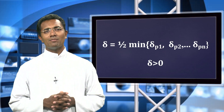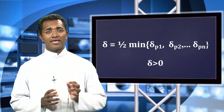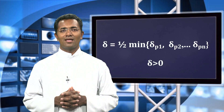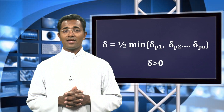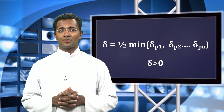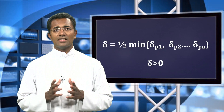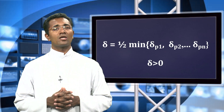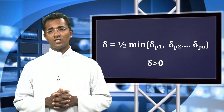As delta is the minimum of a finite number of positive quantities, delta is greater than 0. So this is how delta is chosen with respect to the epsilon already given.